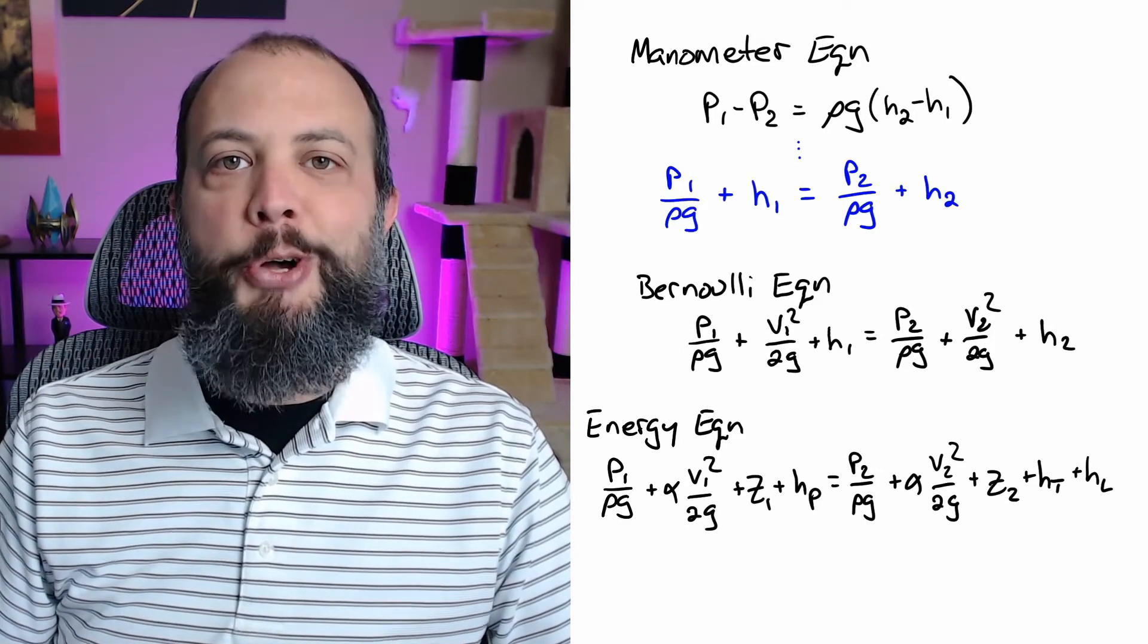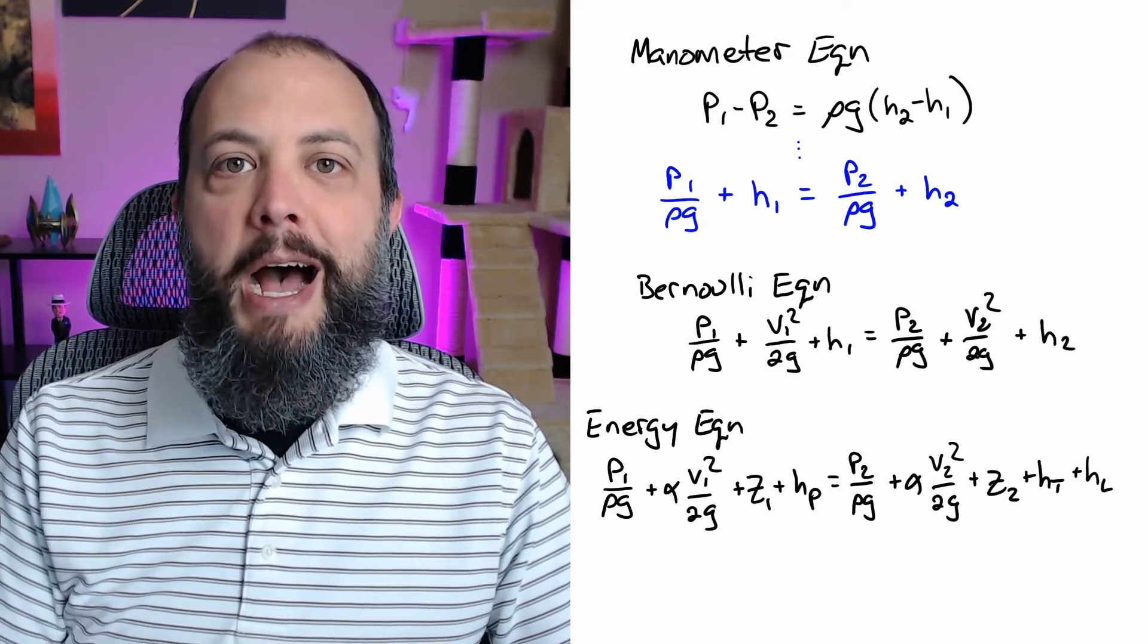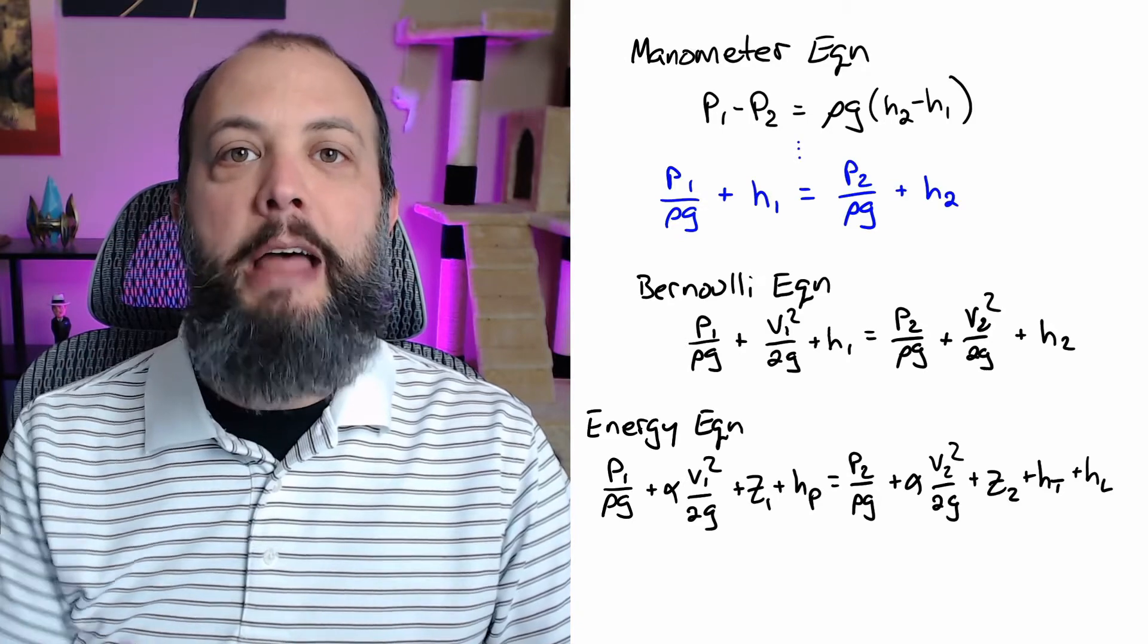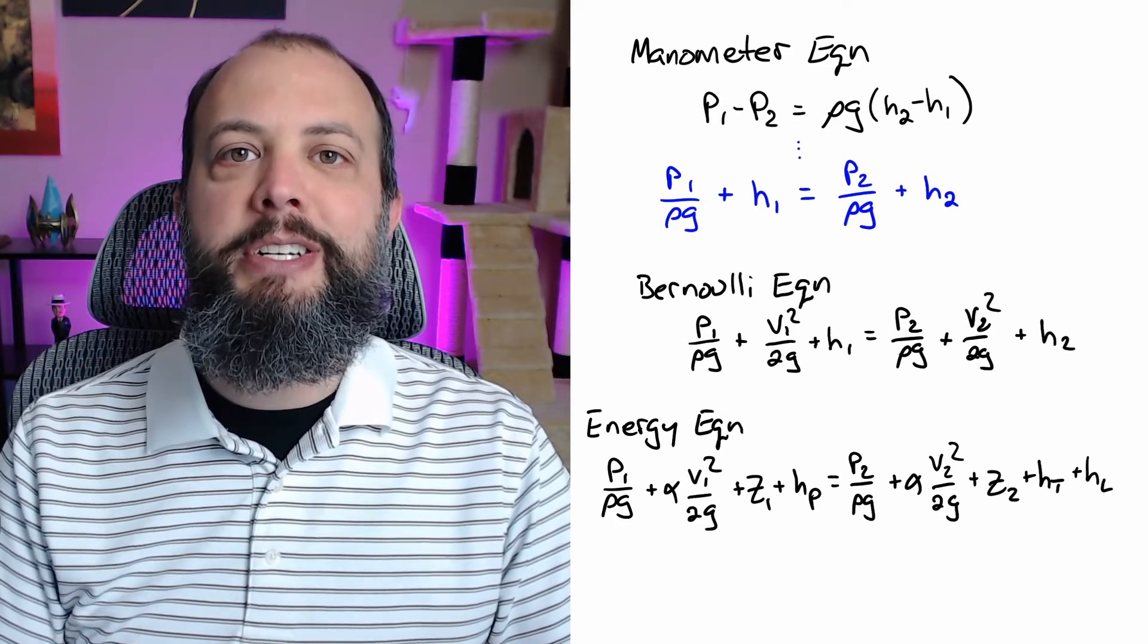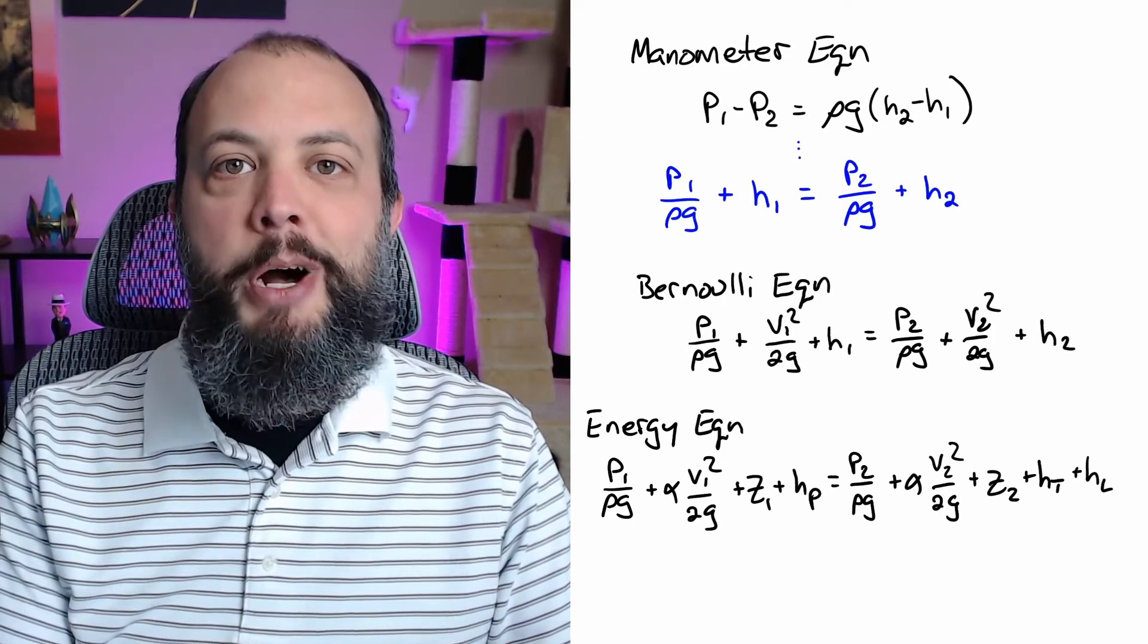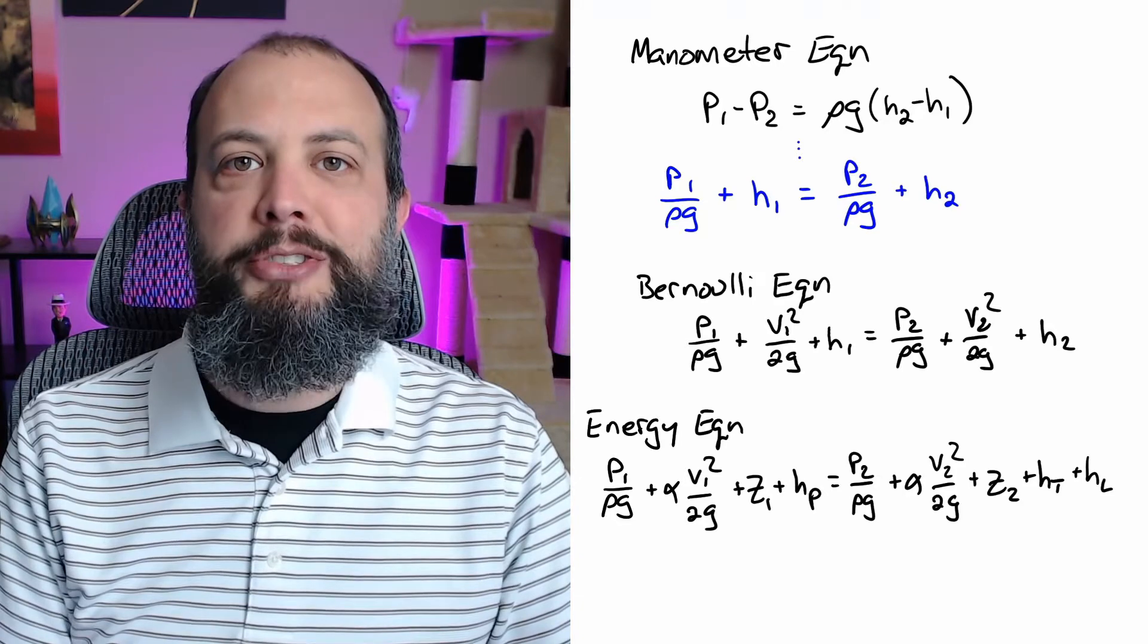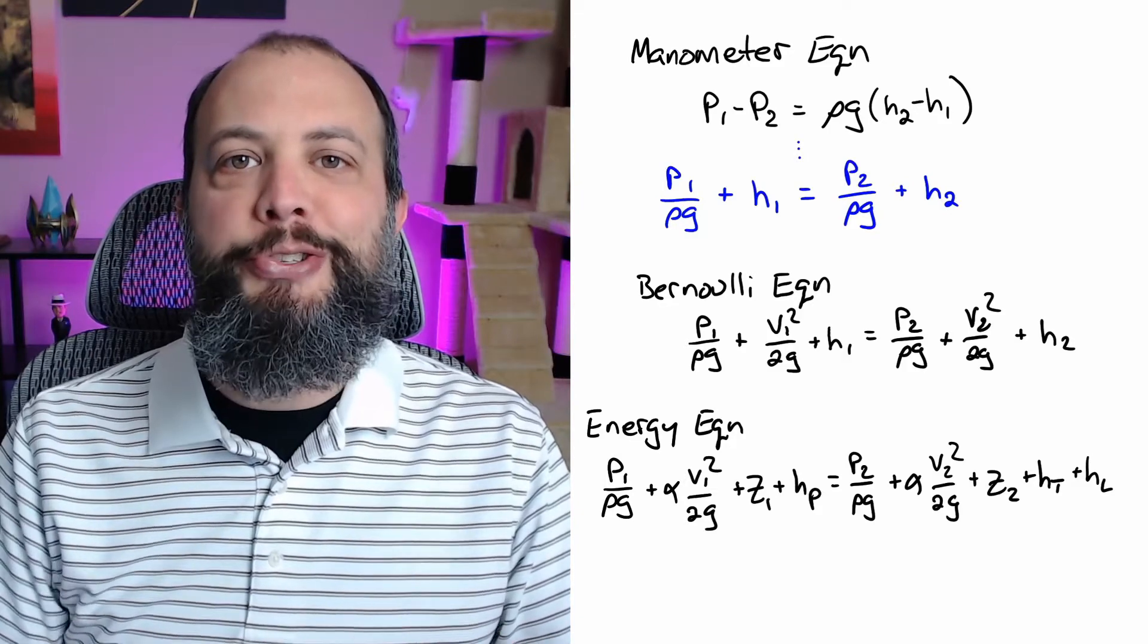So summing up, you're going to be exposed to conservation of energy four different times in this fluid mechanics class. The first time was manometers, where you looked at static flow that just exchanged pressure for elevation. The second time was the Bernoulli equation, where you added velocity now that flow is moving along a streamline and you could exchange energy between pressure, elevation and velocity. The third time is the energy equation, where you finally allow energy to be added to a system by a pump or removed from the system by a turbine or generic head loss. Then the fourth time you're going to do conservation of energy is when you'll explicitly solve for head loss based on the smoothness of the pipe and the other pipe characteristics, and that will tie back into the energy equation in order to solve for other terms.